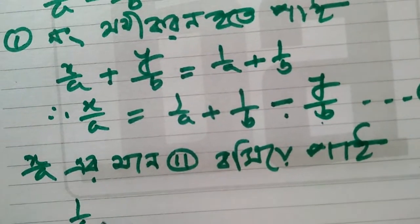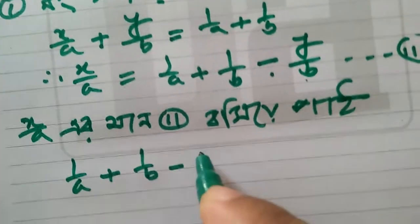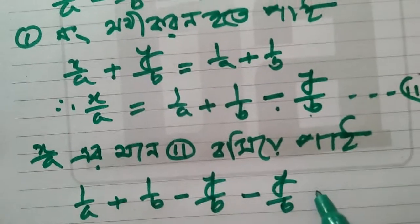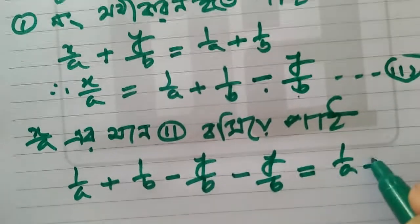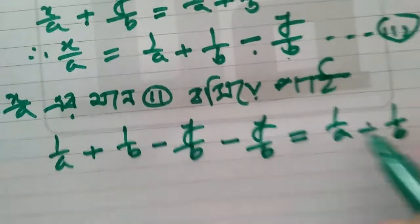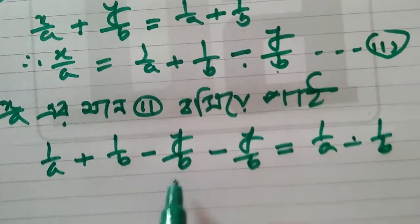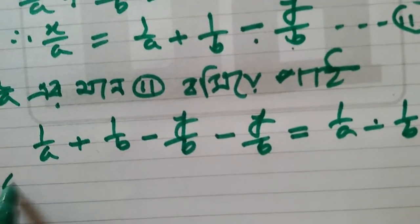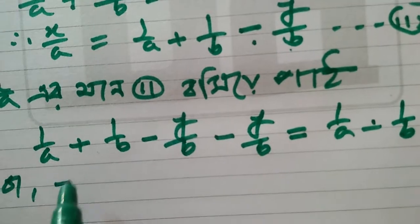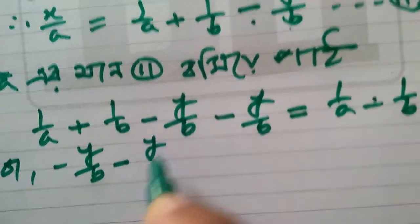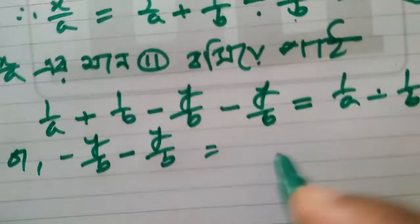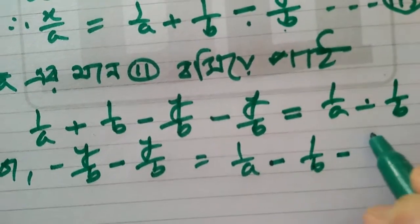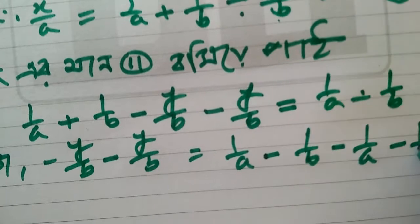1 by a plus 1 by b minus y by b minus y by b is equal to 1 by a minus 1 by b. We can see the number x by 1 as per the equation. So bar minus y by b minus y by b is equal to 8, and 1 by a minus 1 by b minus 1 by a minus 1 by b.